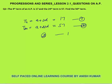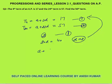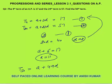So 20d = 40, giving d = 2. Substituting d = 2 into equation 1: a + 6 = 17, so a = 11. Now we calculate the 50th term: term number 50 = a + 49d.